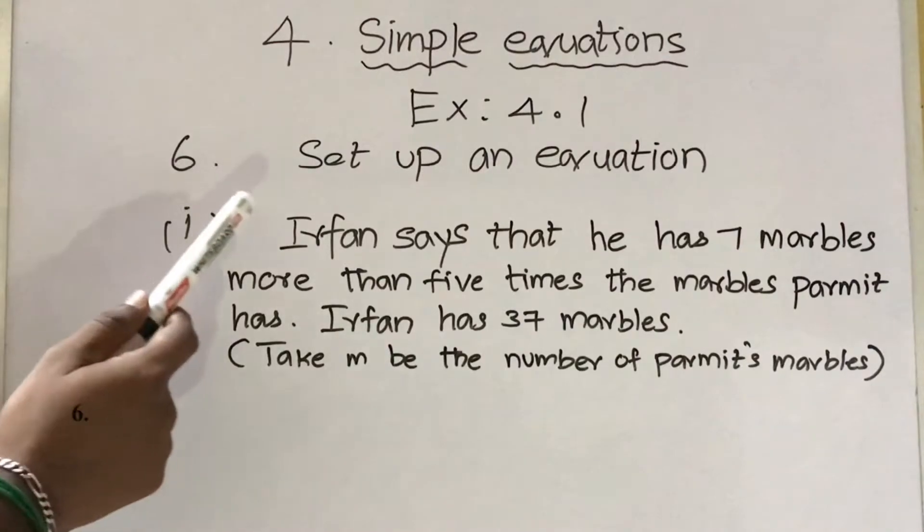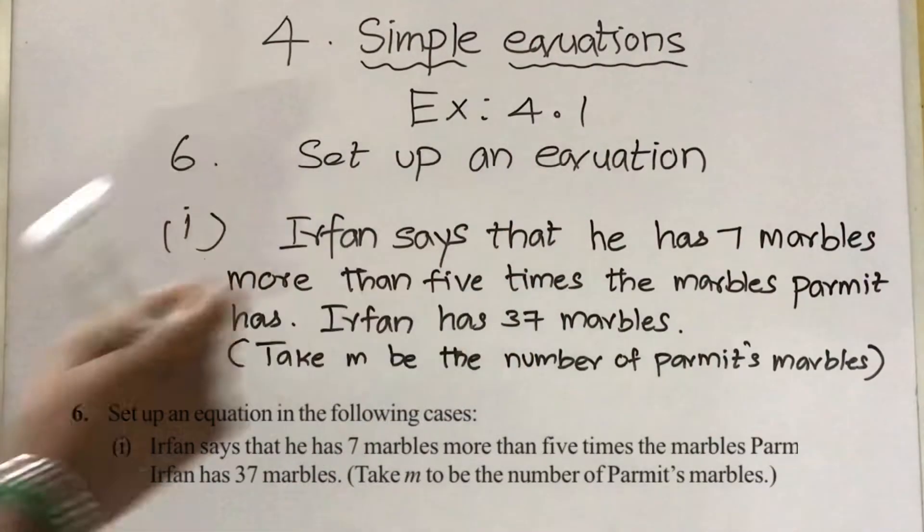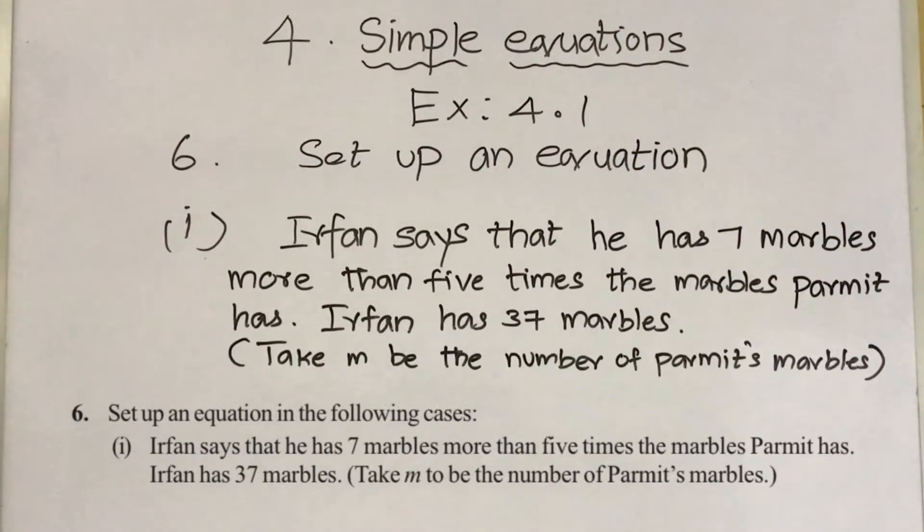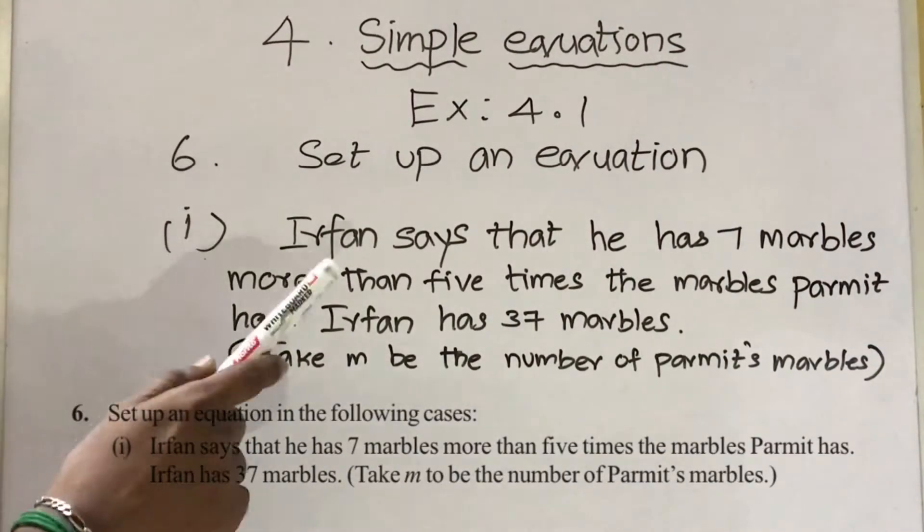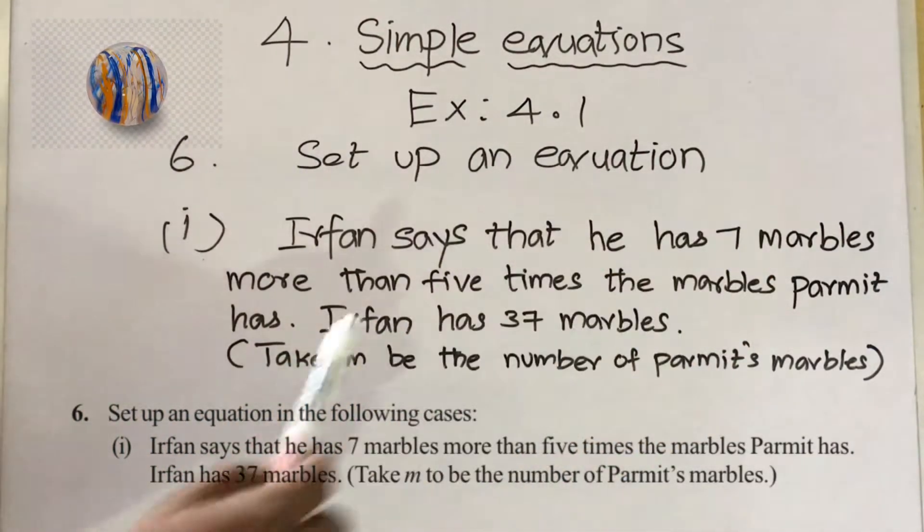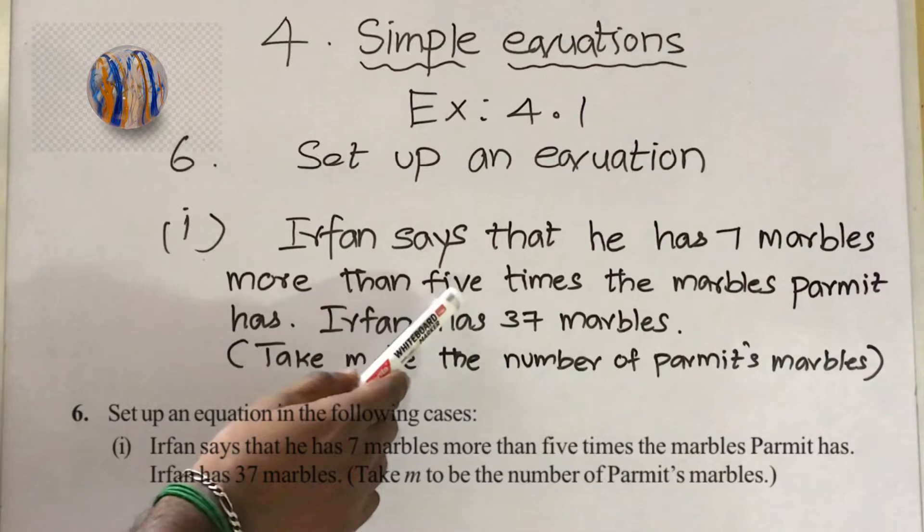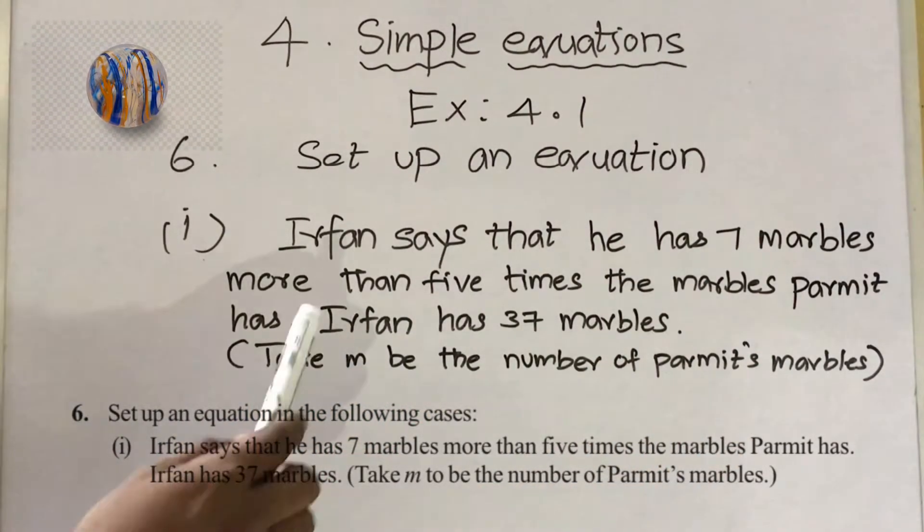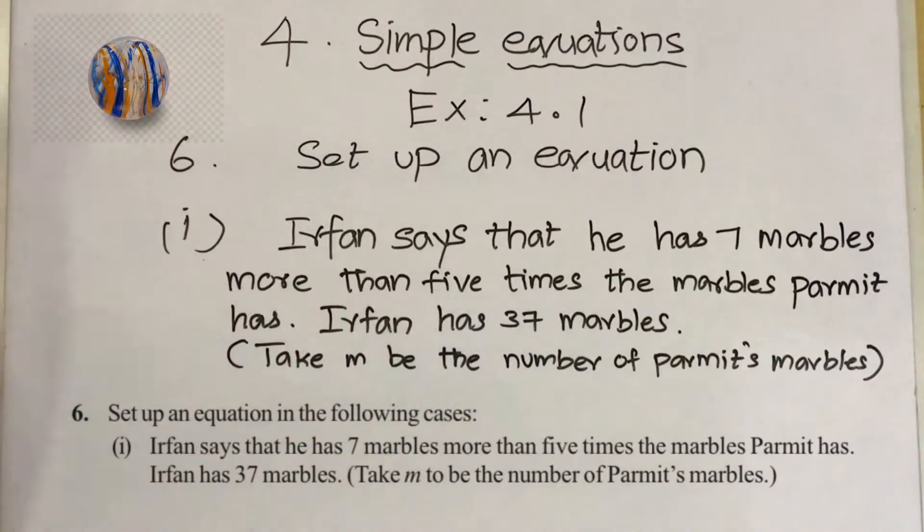Sixth sum: set up an equation. We have to make an equation from the given statement. Irfan says that he has seven marbles more than five times the marbles Parmit has. Irfan has 37 marbles.